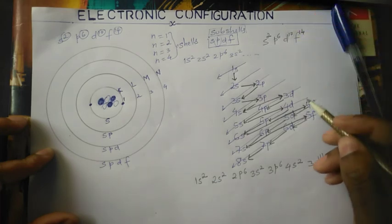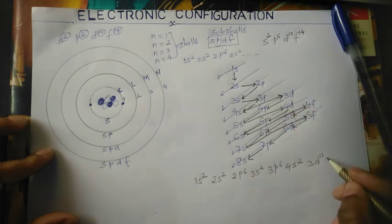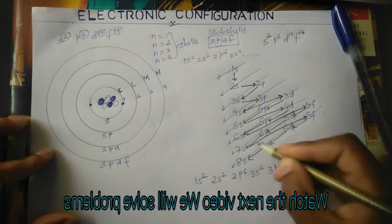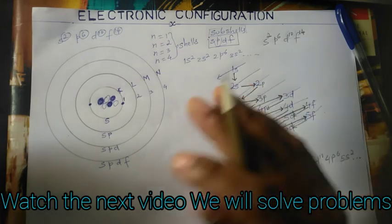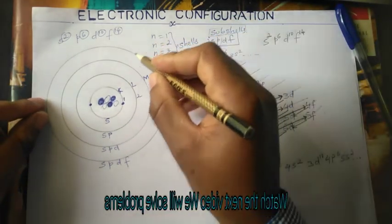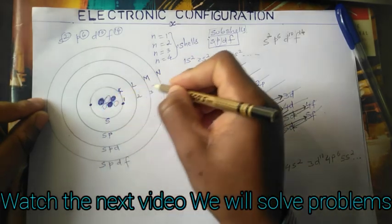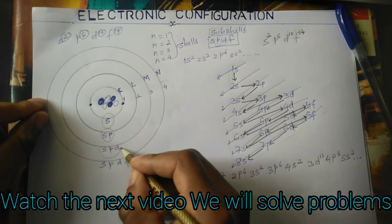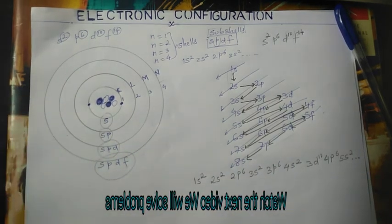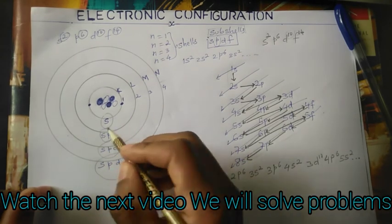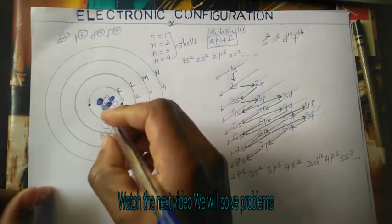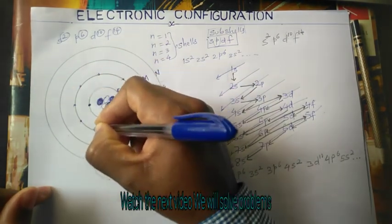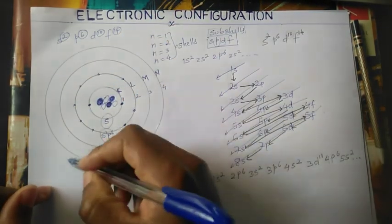Remember d has 10 electrons. After 4p6 we go to 5s2, and you can use this to find the group and period of any element in the periodic table. There are 118 elements. Also remember the sub-levels: first shell has just s; second has s and p; third has s, p, and d; fourth has s, p, d, and f. Shell totals: first shell = 2 electrons, second = 8, third = 18. In the next video we will solve problems to find the group and period of elements.